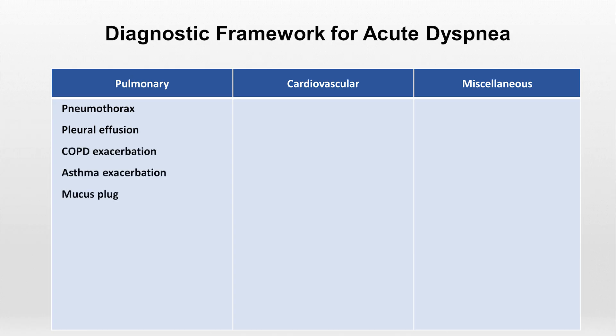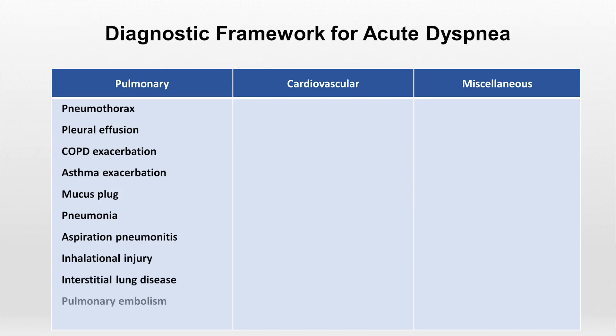We can also list a mucus plug, which consists of a glob of mucus literally obstructing a major airway, pneumonia, aspiration pneumonitis — which is an inflammatory process of the alveoli and distal airways caused by aspiration of food or secretions — inhalational injury, the broad category of interstitial lung disease, and a pulmonary embolism, which is a blood clot in one of the pulmonary arteries. This list of pulmonary causes of acute dyspnea is not complete, but it covers the most common and important conditions.